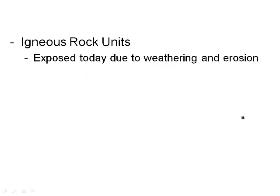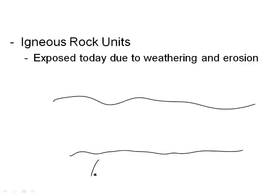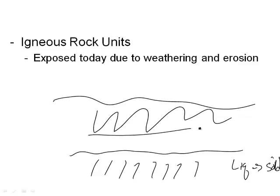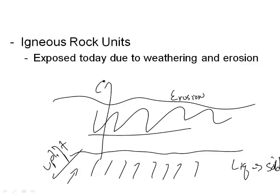Most igneous rock units had to get exposed because they were formed deep under the crust — it turned from a liquid into a solid, from magma into rock. Over time, the upper layer got exposed in one of two ways: either by erosion over many years, or by some kind of uplift which causes it to rise. That's what happened to the Pikes Peak Batholith — it was formed way deep underground, got uplifted, and now it's exposed for us to see.